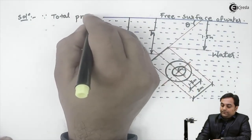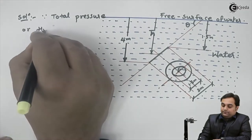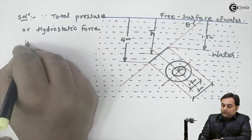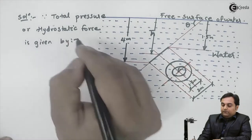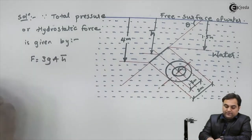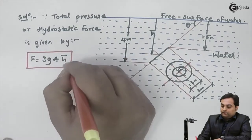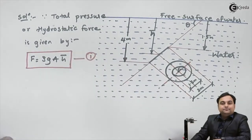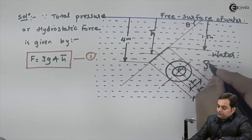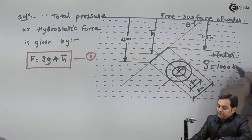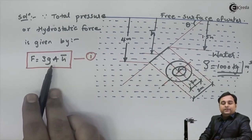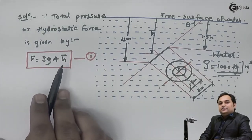The total pressure or hydrostatic force is given by the formula F = ρg × A × h̄ — this is equation number one. Here ρ is the density of water, which is 1000 kg/m³. g is 9.81. Area A is already known from the data. The only unknown is h̄, so if h̄ is known, this problem is solved.